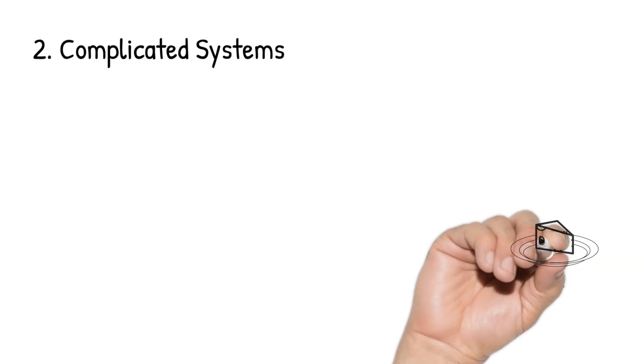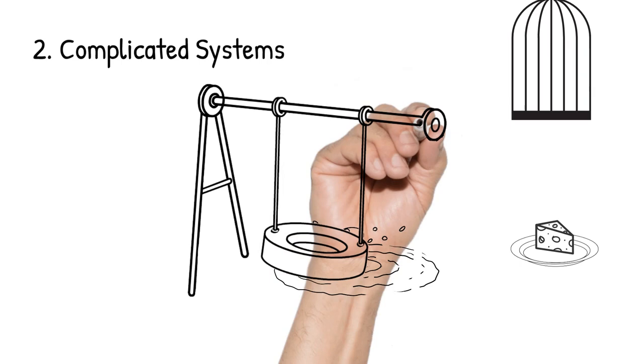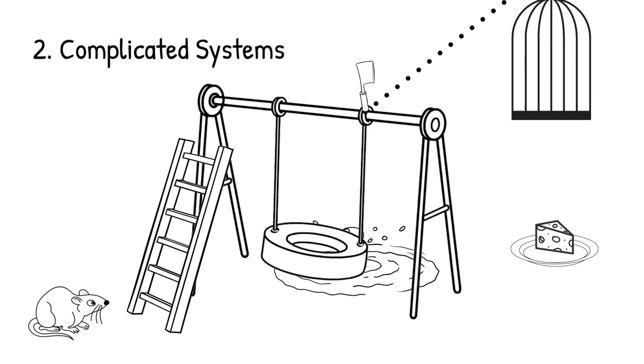Complicated systems are more like a game of mousetrap. They're made up of lots of dissimilar parts, each with their own rules and behaviors. The outcomes of a complicated system are still additive, but much more time-intensive to predict.